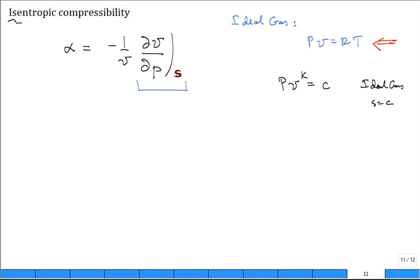So if I want to calculate the derivative, I have to rearrange this. How can I rearrange it? Put constant over pressure is equal to V to the K. Now the next step. What's the next step? V is equal to a constant over pressure to the one over K. What was K again for air? Roughly 1.4.